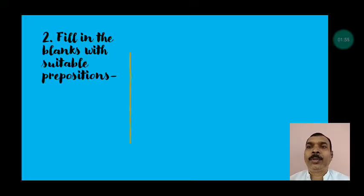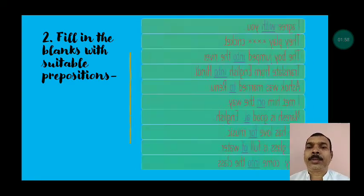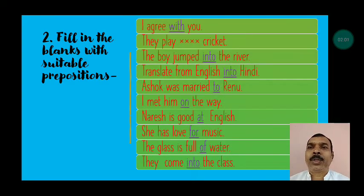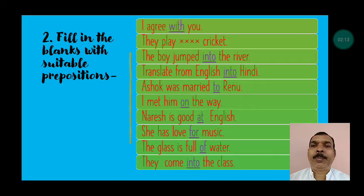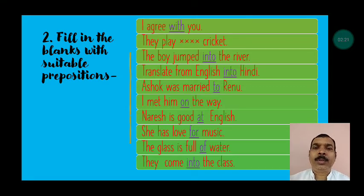Number 2: Fill in the blanks with suitable prepositions. There are some more sentences. I agree — you. Answer: with. I agree with you. They play — cricket. There is no need of a preposition here. They play cricket. The boy jumped — the river. Answer: into. The boy jumped into the river.